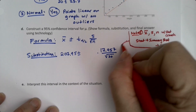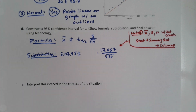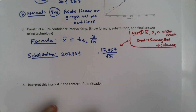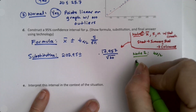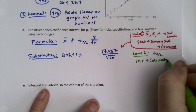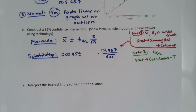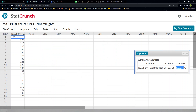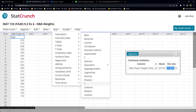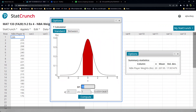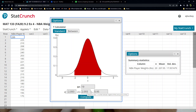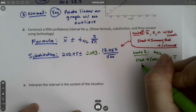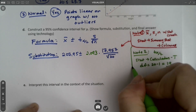Now for the t-value — note number two. To find t-alpha-over-2, use Stat > Calculators > T in StatCrunch. Click Between, put in degrees of freedom of 19 (since n is 20, so df = 20 minus 1), enter area of 0.95 for the confidence level, and hit Compute. We get t = 2.093.